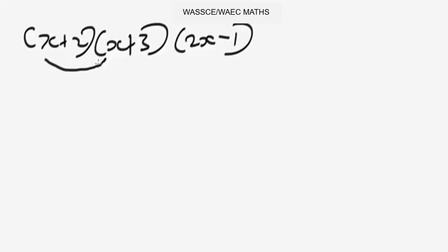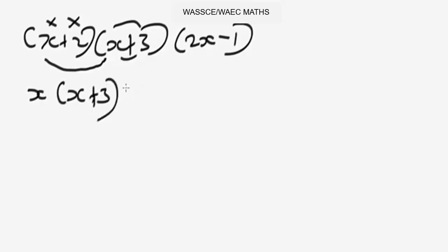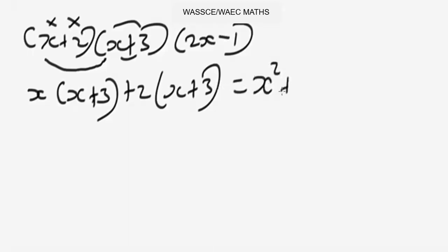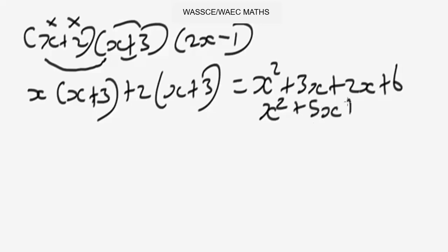Let's simplify together. First, deal with the double bracket — simplify the first two brackets first. So x multiplies everything in x plus 3, and plus 2 also multiplies everything in x plus 3. This gives: x times x equals x squared plus 3x, then 2 times x equals plus 2x, plus 6. Collecting like terms: x squared plus 5x plus 6.